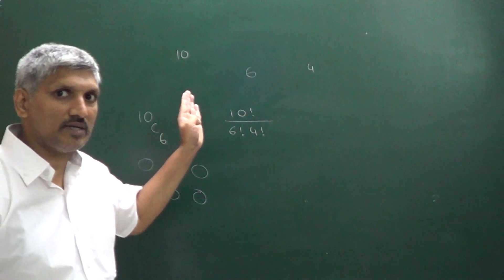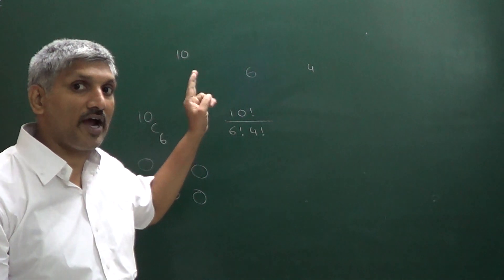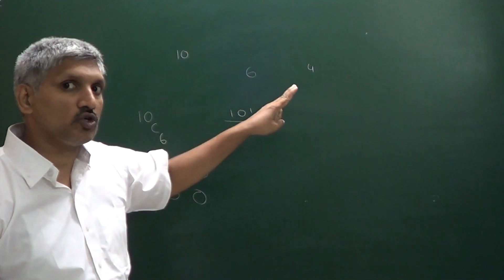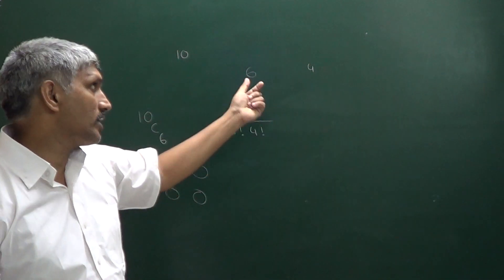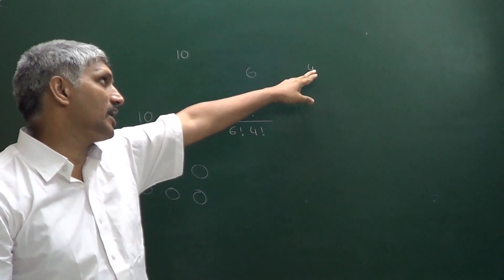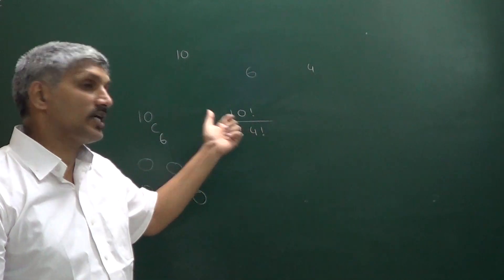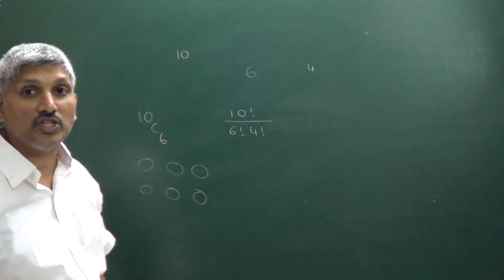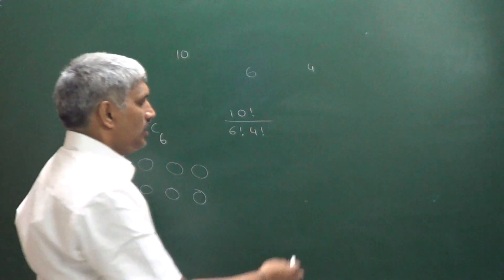10C6 is nothing but 10 factorial divided by 6 factorial into 4 factorial. So 10 items divided into 2 groups — one containing 6, the other containing 4 — can be divided in these many ways.